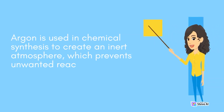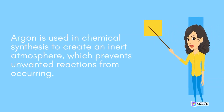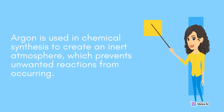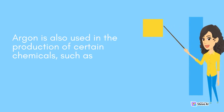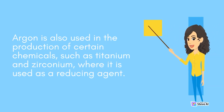Argon is also used in chemical synthesis to create an inert atmosphere, which prevents unwanted reactions from occurring. Argon is also used in the production of certain chemicals, such as titanium and zirconium, where it is used as a reducing agent.